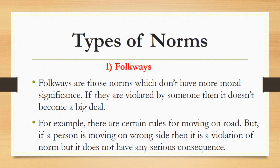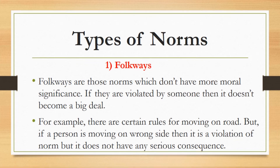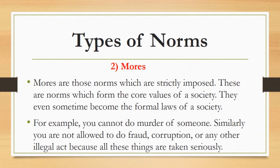For example, there are certain rules for moving on the road, but if a person is moving on the wrong side then it is a violation of a norm but it doesn't have any serious consequence. Similarly, smoking in a public place is against the norms, but if someone is doing so there is no serious consequence and no one will be taking any action — although in some societies there are strict rules in this regard.